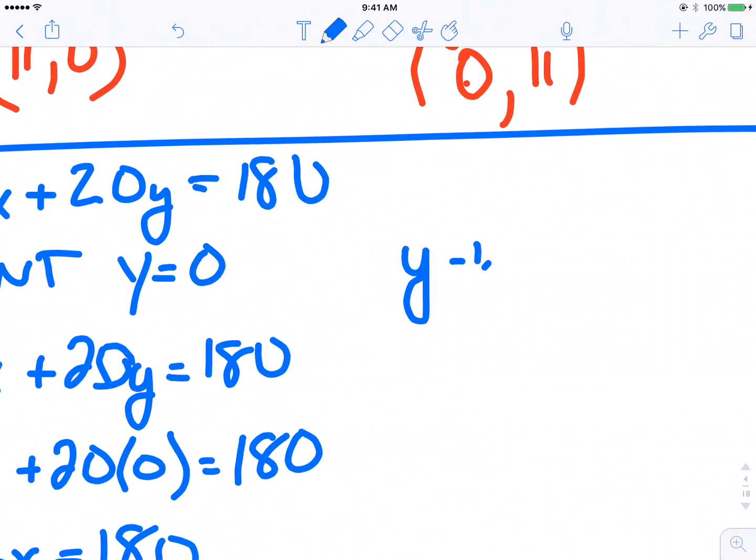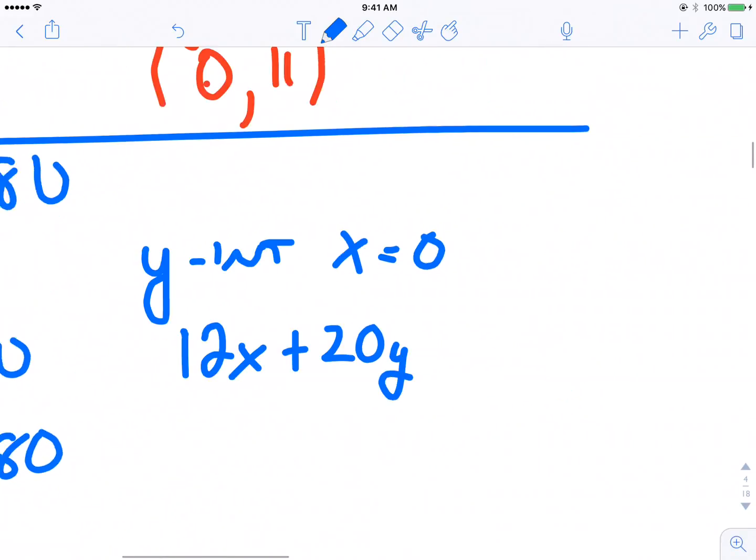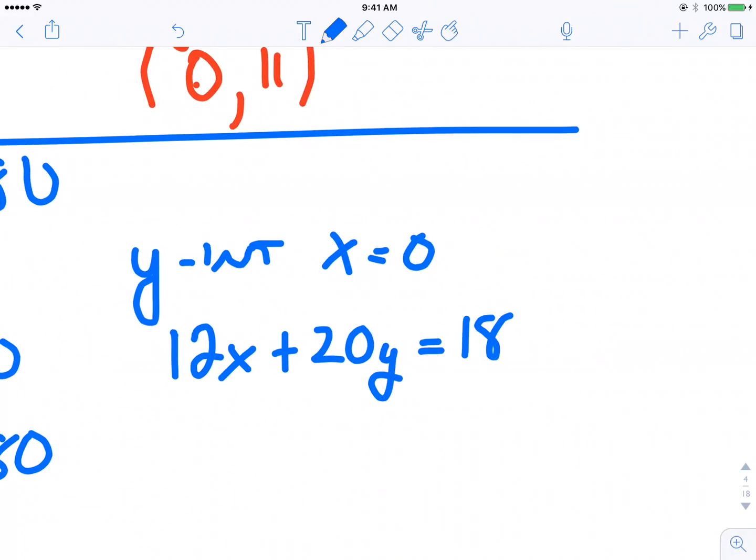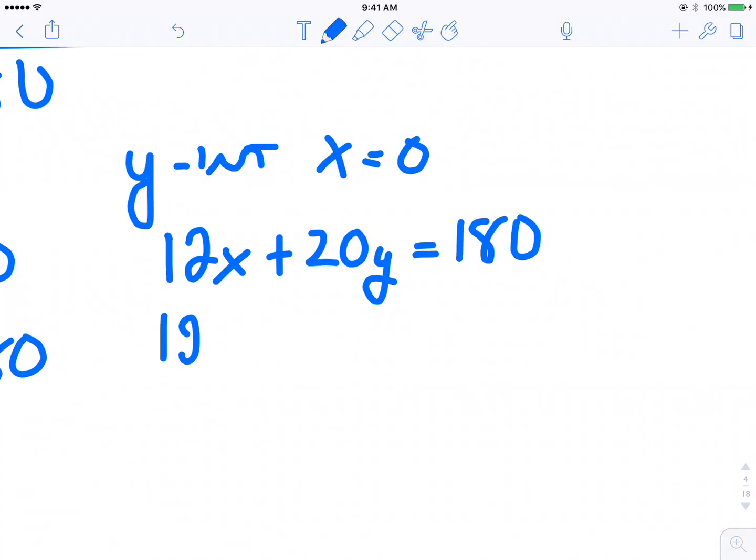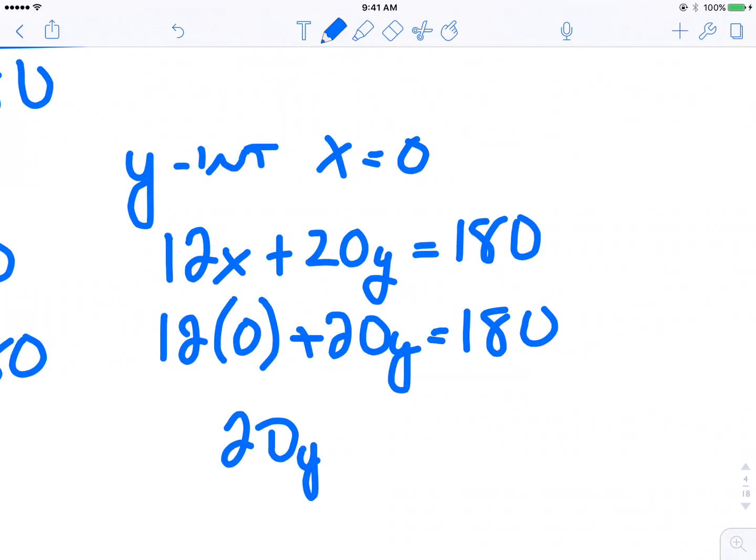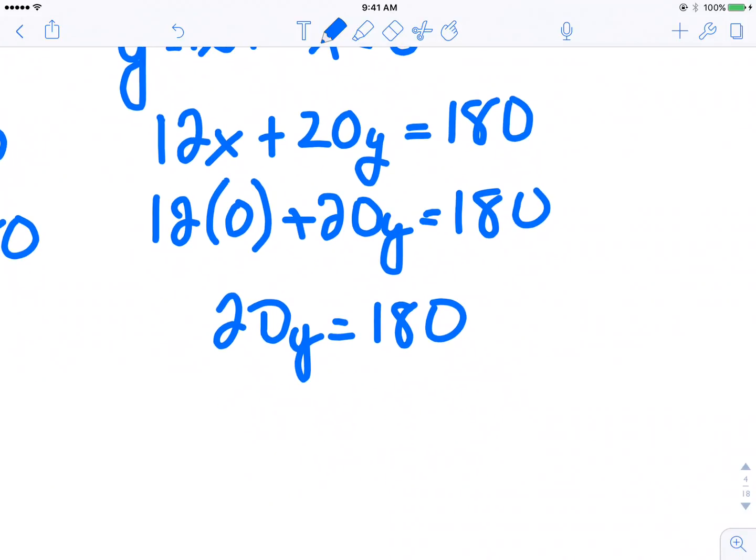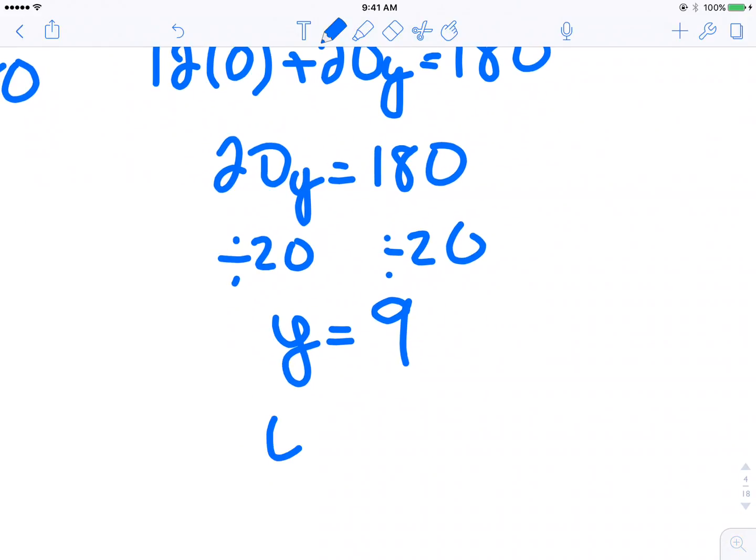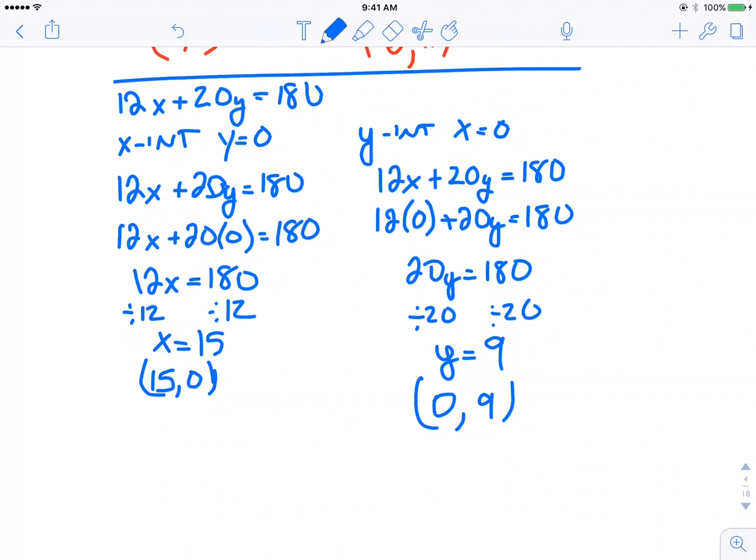For the y-intercept, X is 0. 12 times 0 plus 20y equals 180, so 20y equals 180. Divide by 20, Y equals 9, giving me a coordinate point 0 comma 9.